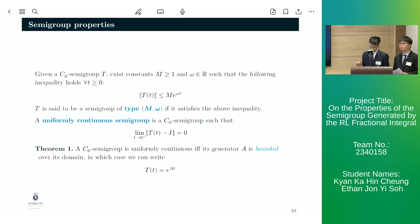And we have theorem 1, which states that a uniformly continuous semigroup can be expressed in terms of its infinitesimal generator a in the following way. And note that a is bounded over its domain.